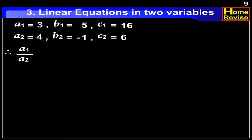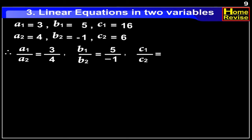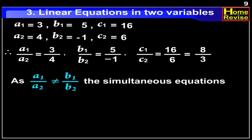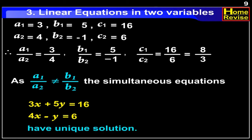Now, a1 upon a2 is equal to 3 upon 4, b1 upon b2 is equal to 5 upon minus 1, and c1 upon c2 is equal to 16 upon 6, which is equal to 8 upon 3. As a1 upon a2 is not equal to b1 upon b2, the simultaneous equations 3x plus 5y equal to 16 and 4x minus y equal to 6 have a unique solution.